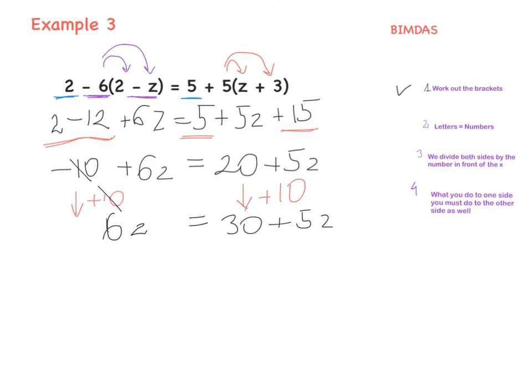Now we need to get rid of 5z. It's positive 5z, so we take it away: minus 5z on both sides. So we have 6z minus 5z, which gives 1z — just z — equals 30. Done. Solved.